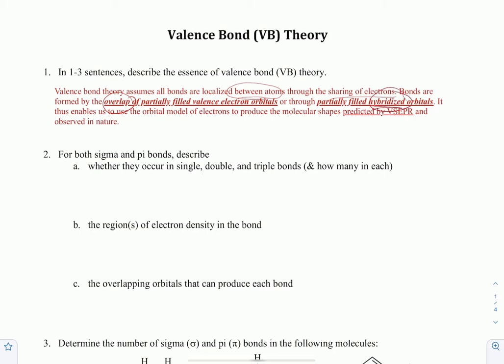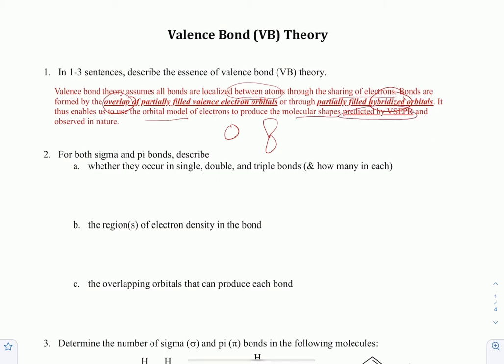Hybridization is going to be an important word as we do some of these problems. Valence bond theory enables us to use the orbital model — S orbitals and P orbitals — to produce the molecular shapes predicted by VSEPR, like linear, trigonal planar, trigonal bipyramidal, tetrahedral, and all those observed in nature.